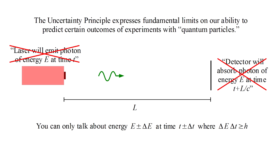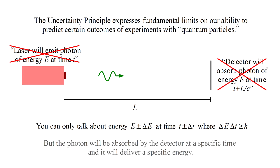However this only applies to making predictions. When the photon is absorbed by the detector it will have arrived at a specific time and it will have delivered a specific energy E.